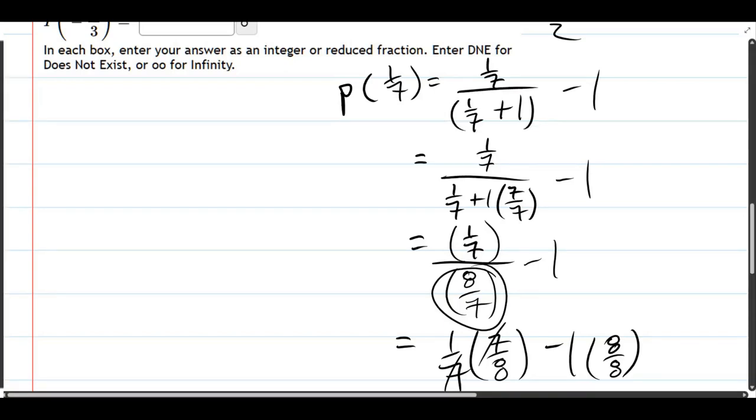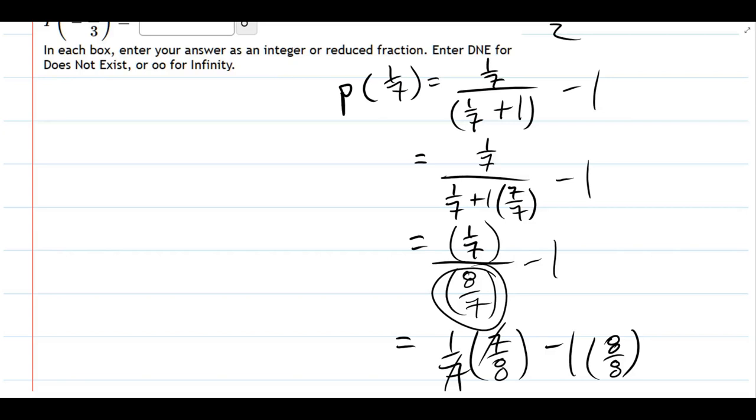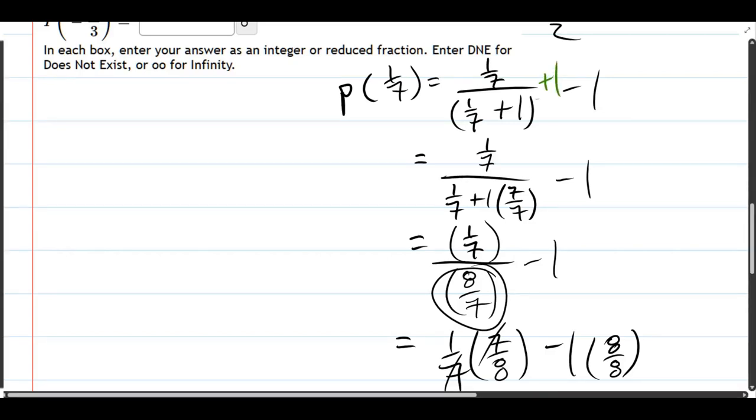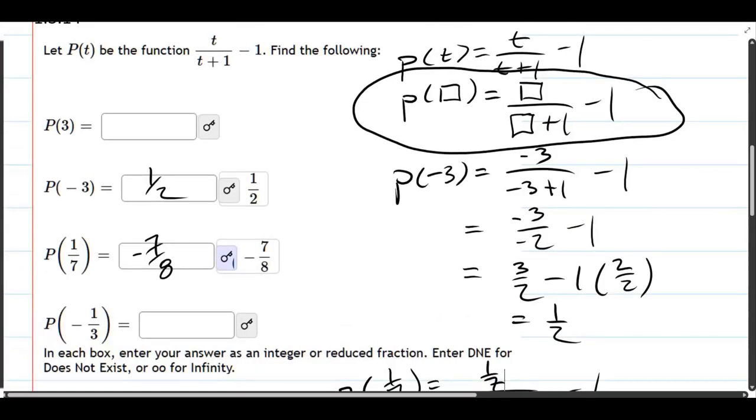Make sure that plus 1 makes it inside the denominator. You don't want to write your plus 1 outside the fraction. That's not how it should go. And make sure your negative 1 stays outside the fraction because it was outside the fraction to begin with.